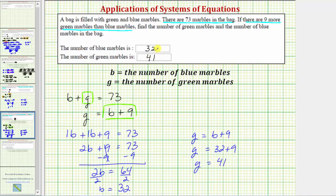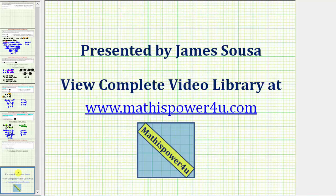Notice how both of these values do satisfy both equations, because thirty-two plus forty-one does equal seventy-three, and forty-one does equal thirty-two plus nine. And therefore we know our solution is correct. I hope you found this helpful.